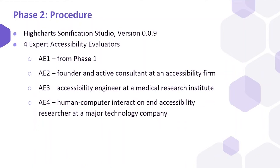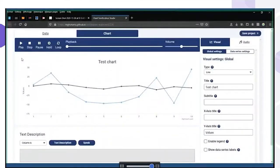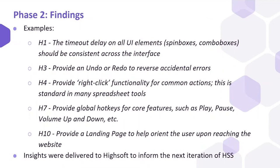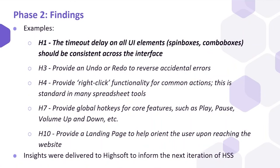Given our Phase 1 findings and insights, the team at HiSoft was able to further improve upon the HSS and provide us with version 0.0.9. Phase 2 included another critical usability and accessibility assessment from four expert accessibility evaluators. On these next two slides, you'll see screen grabs from Zoom calls with some of our accessibility experts. Considering the significant updates to the HSS system, the experts were able to more exhaustively explore and evaluate the HSS interface, again identifying usability and accessibility issues based on Nielsen's UX heuristics.